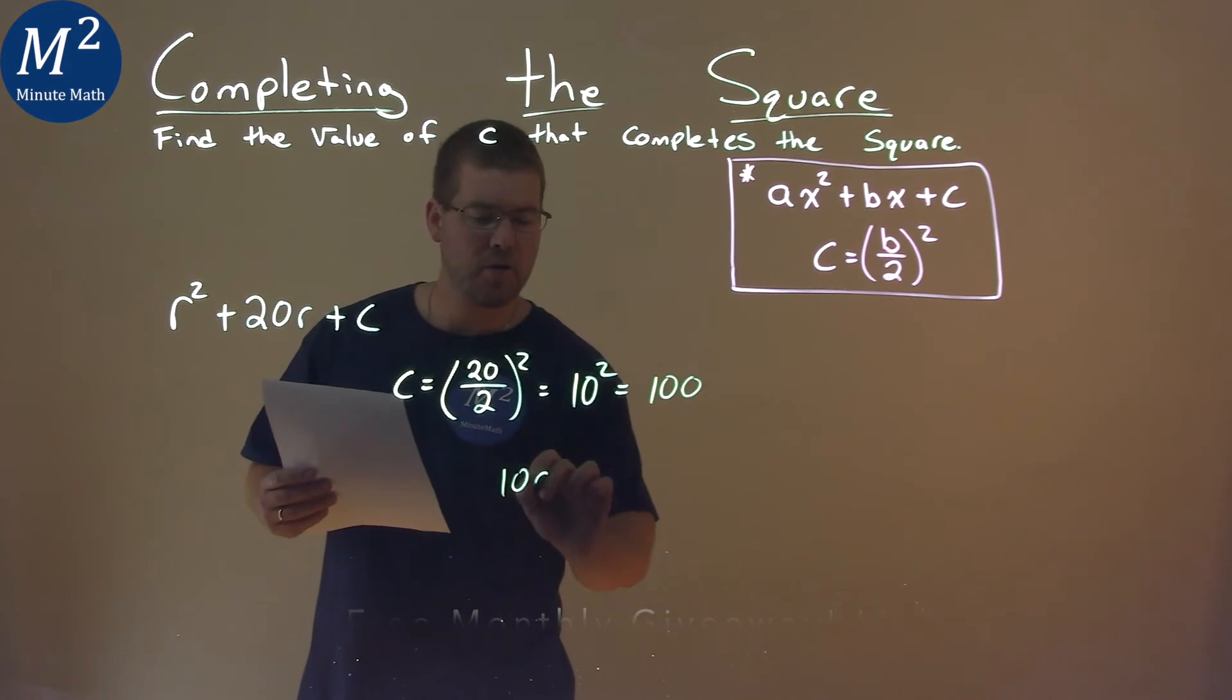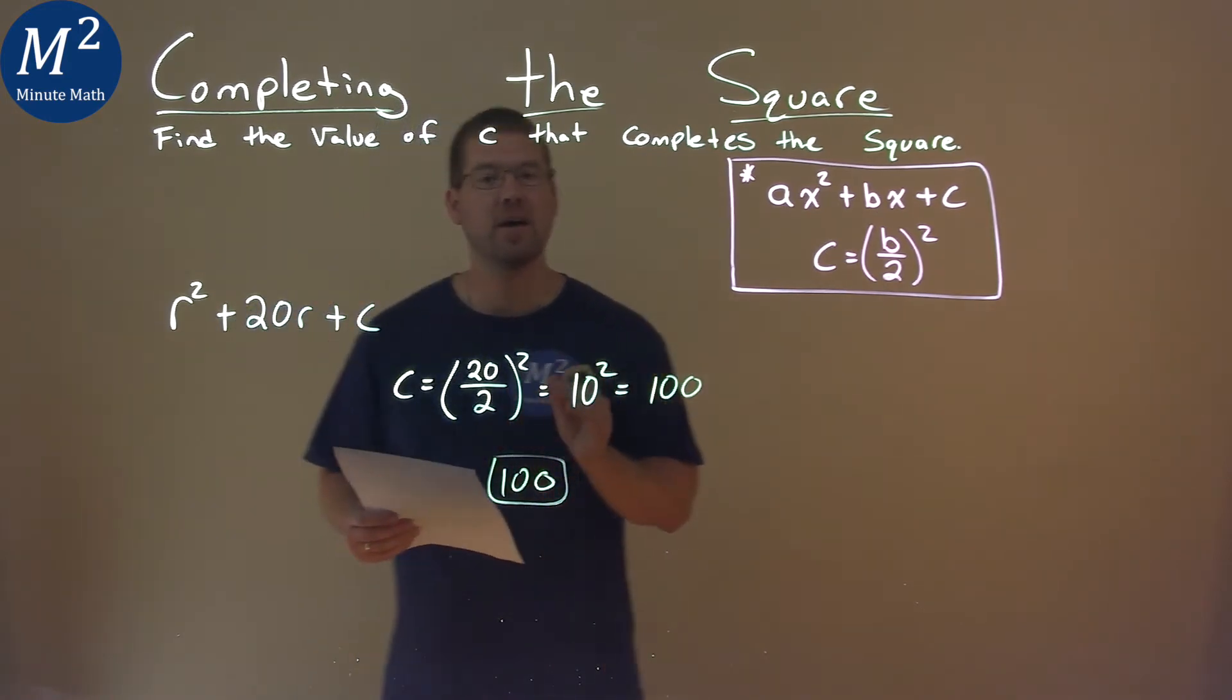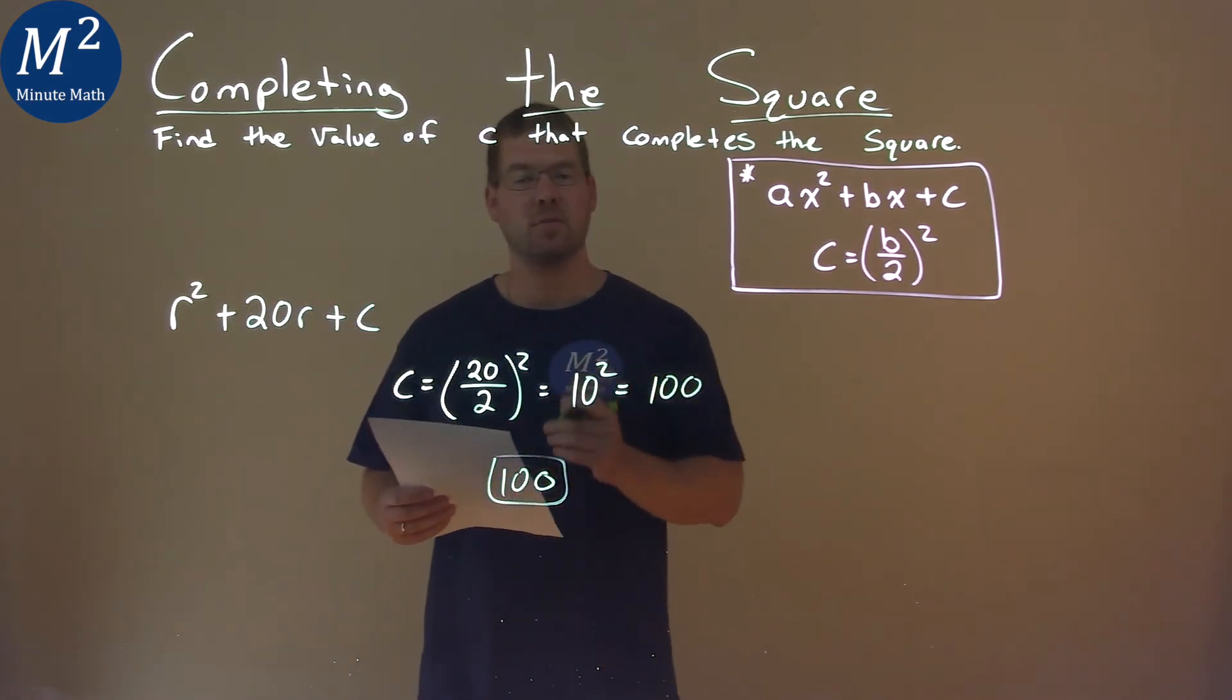Not too bad. 100 is the c value here that completes the square.